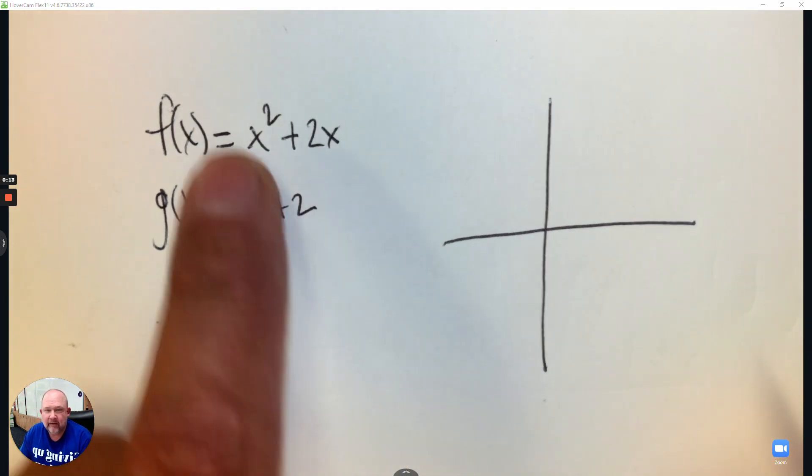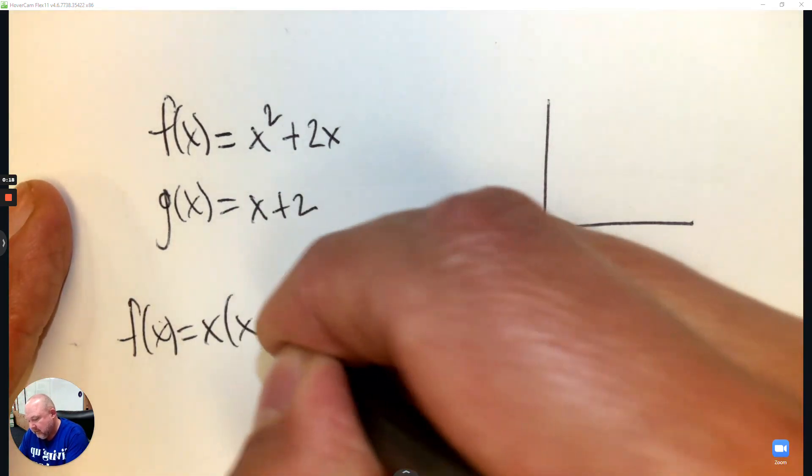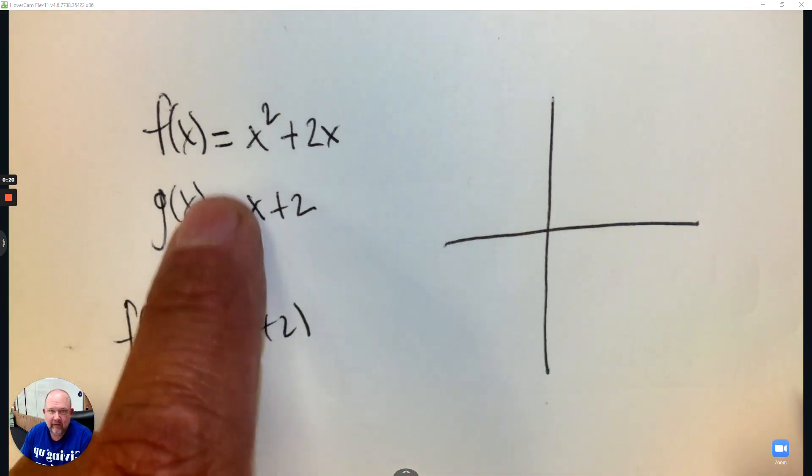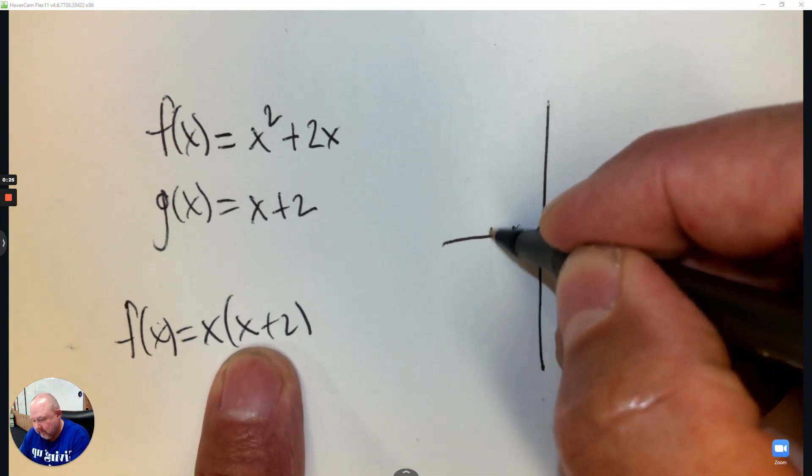So the first one, if I'm going to graph it, I'm actually going to factor it. So I'm going to factor out an x. And then the two intercepts are 0 and negative 2. So here's 0 and negative 2.